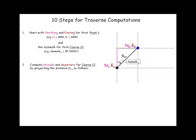If we projected in a northerly direction, that would be our latitude. If we projected in an eastern direction, that would be the departure.